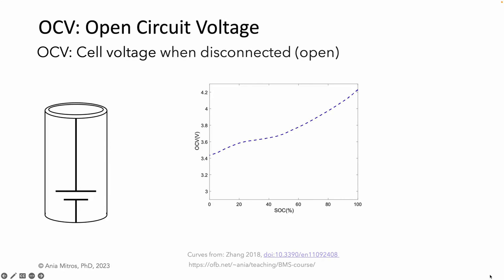OCV stands for open circuit voltage — the cell voltage when the cell is open or disconnected from any circuit. You will hear the acronym OCV a lot when working with battery management or algorithms. In some situations, the terminal voltage equals OCV. When no current is flowing and the cell is well-rested, terminal voltage closely approximates OCV. Terminal voltage is what we can measure; OCV is the ideal voltage inside the cell.